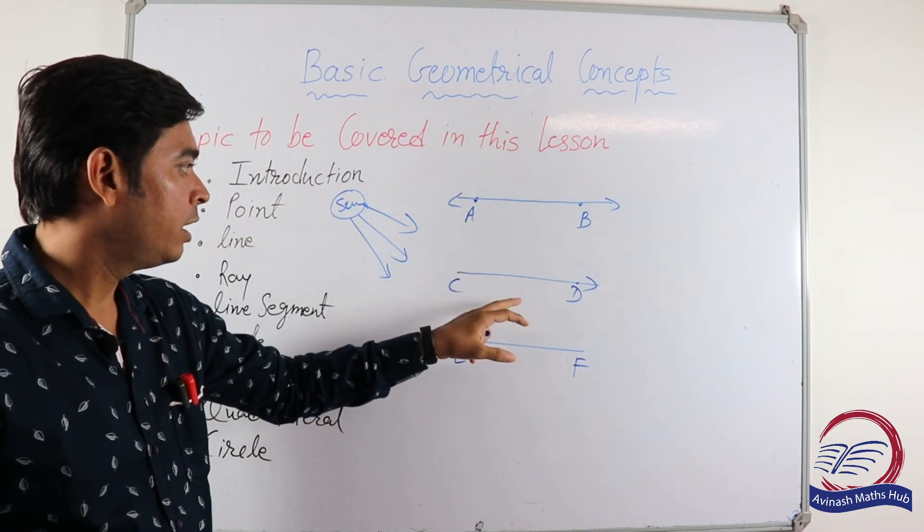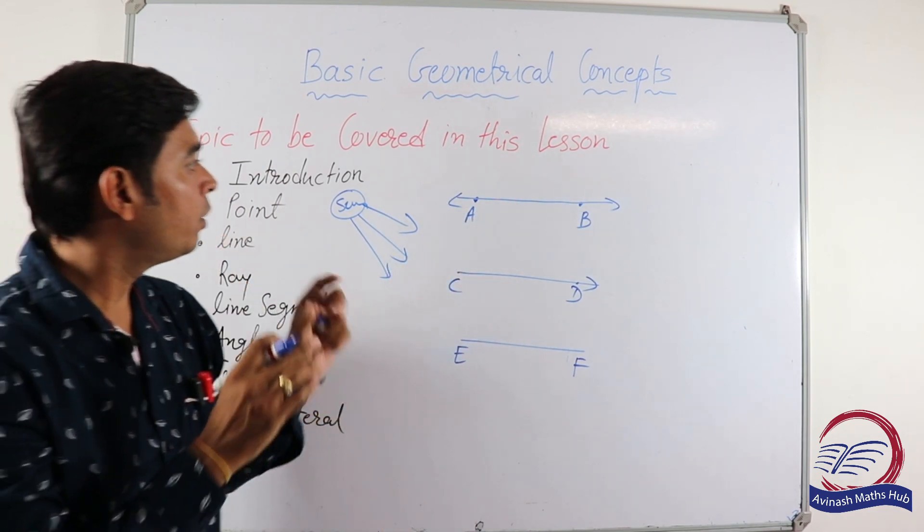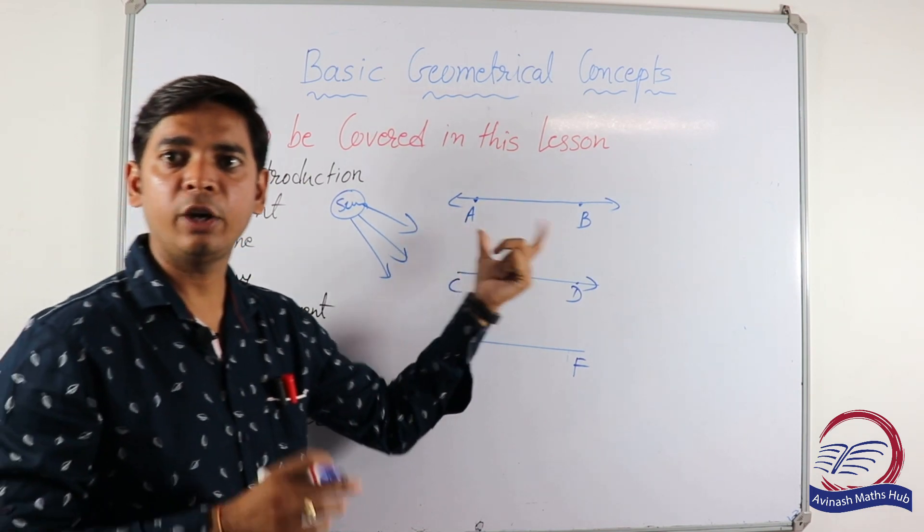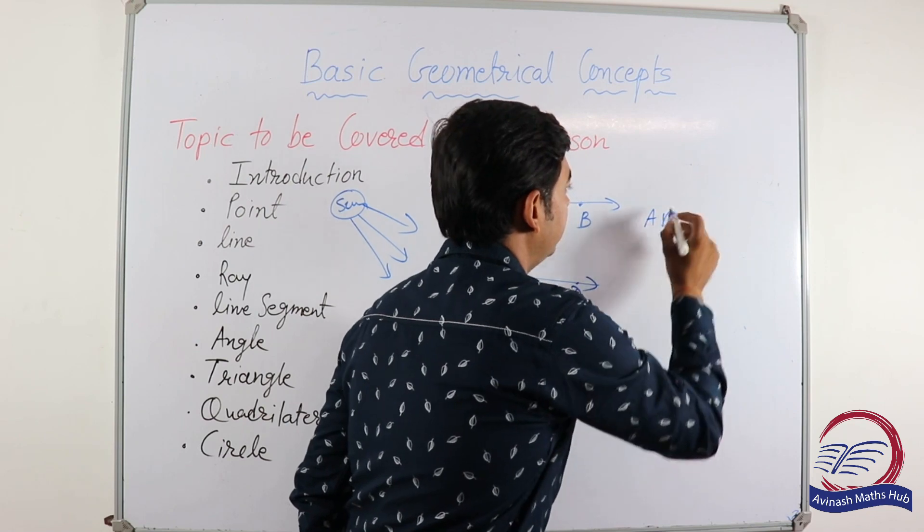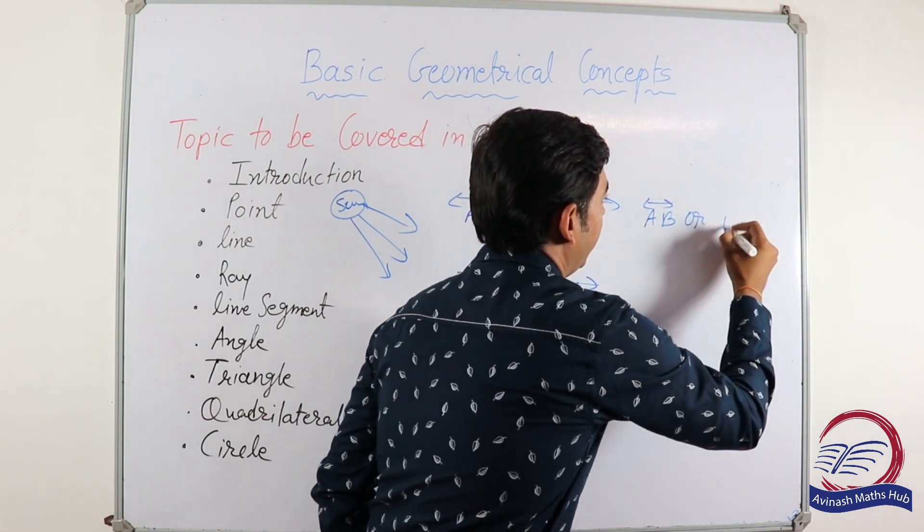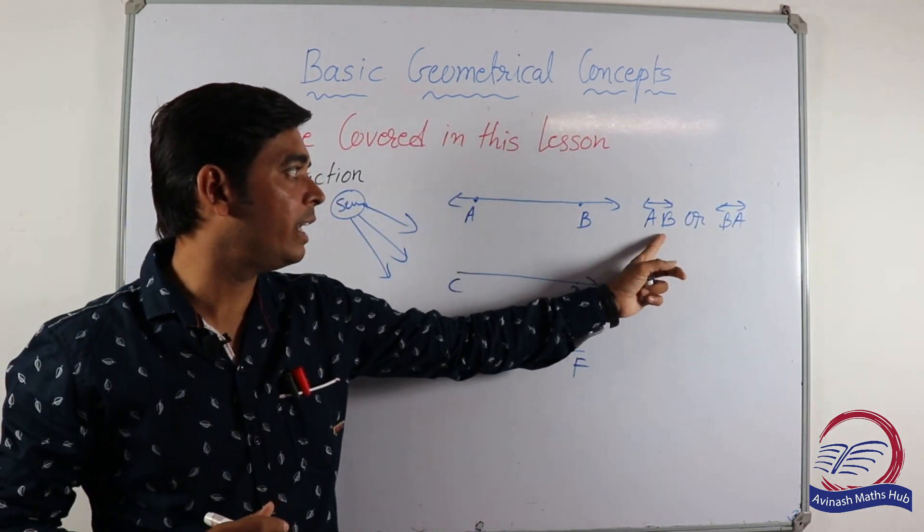Let's compare the line, ray, and line segment. Now how do we represent the line? This is the representation of line AB. Line AB.